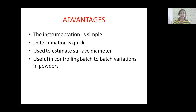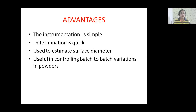The important advantages of the Fischer Sub-Sieve Sizer instrument in the air permeability method are: the instrumentation is very simple, determination is quick, it can be used to estimate the surface diameter, and it is useful in controlling batch-to-batch variations in powder.